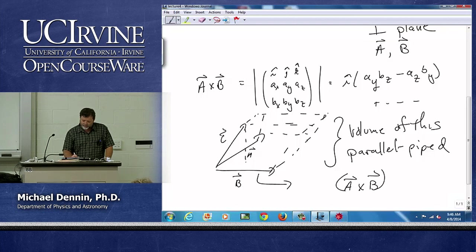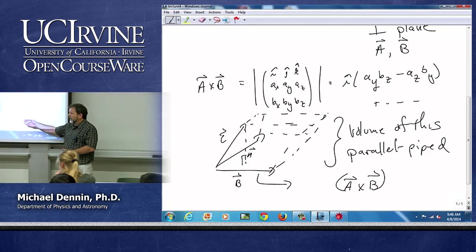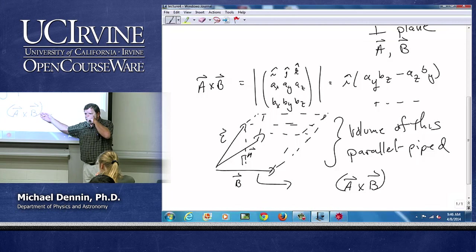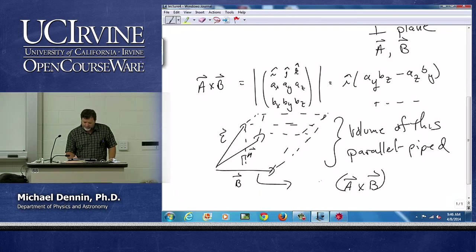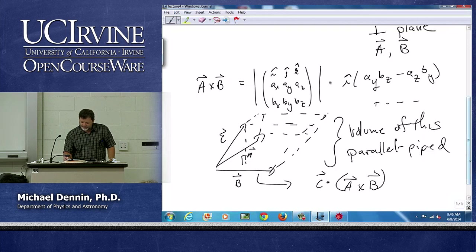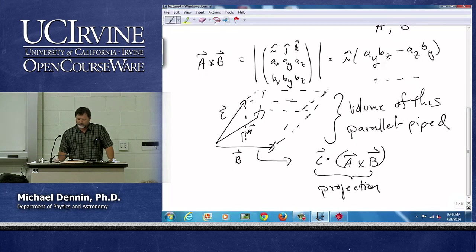And then what I want is the height. Well, the height is the component of c parallel to the area vector. Parallel to the normal vector of a and b. And to get the component parallel, I use the dot product. Because the dot product is fundamentally our projection. So this is that volume.